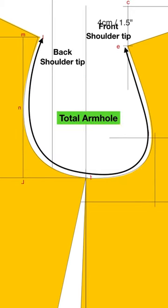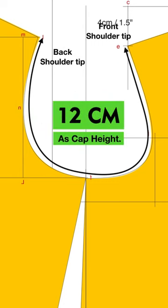If your total armhole is 36 cm, divide it by 3, and you will get 12 cm as your cap height.